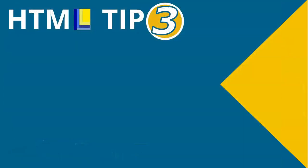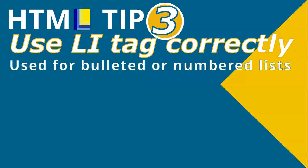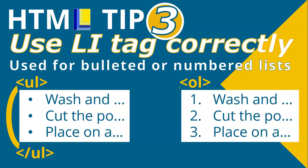HTML tip number three is using the LI or list item tag correctly. I often see CAT students not using it correctly — it relates to bulleted and numbered lists. When you have a bulleted list, you use the UL tag or unordered list, and that needs to end at the end of the list. Many students use the UL tag for each and every bullet — that's wrong. You use it for the entire list. The same goes for numbered lists: use one OL tag for the whole ordered list, not one OL per item.